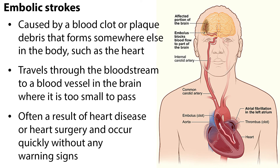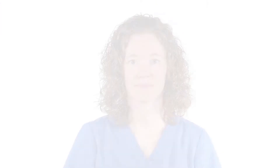Embolic strokes are caused by a blood clot or plaque debris that forms somewhere else in the body, such as the heart, traveling through the bloodstream to a blood vessel in the brain where it is too small to pass. They are often a result of heart disease or heart surgery, and occur quickly without any warning signs. It is often difficult to determine whether a stroke is thrombotic or embolic, because the signs and symptoms can be identical.